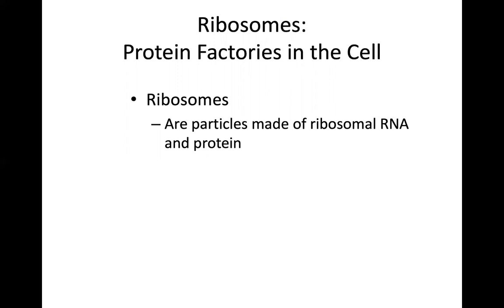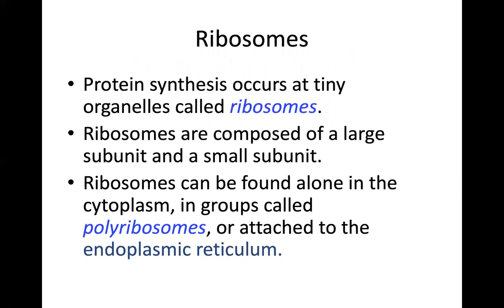Passing now to the ribosome — these are the particles responsible for protein synthesis. Many of you will remember from prior studies how the codon of amino acids works: A, U, C, C, U, A, A, U, U, etc. The ribosome reads these codes and makes the amino acid chain from the RNA. Ribosomes are composed of a large subunit and a small subunit — each ribosome has two subunits. The ribosome can be found alone in the cytoplasm, in groups called polyribosomes, or attached to the endoplasmic reticulum.